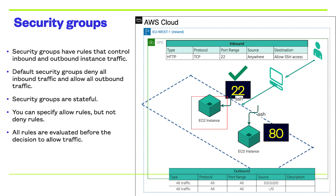Security groups have rules that control inbound and outbound traffic. When you create a security group, it has no inbound rules by default. Therefore, no inbound traffic will be accepted until you add a rule to accept that traffic at a specific port. By default, a security group includes an outbound rule that allows all outbound traffic from your EC2 to the Internet. You can remove that rule and add outbound rules that allow only specific traffic. Security groups are stateful, which means that state information is kept even after a request is processed. When you open port 80 inbound, by default the reply on port 80 outbound will also be open.